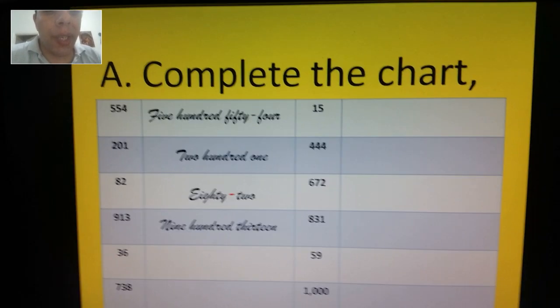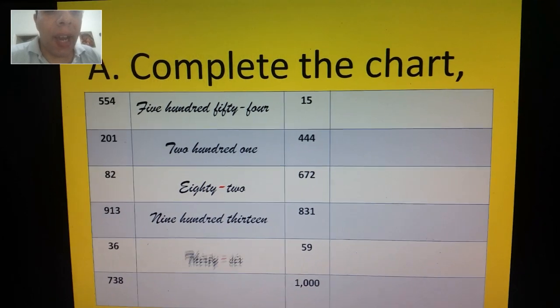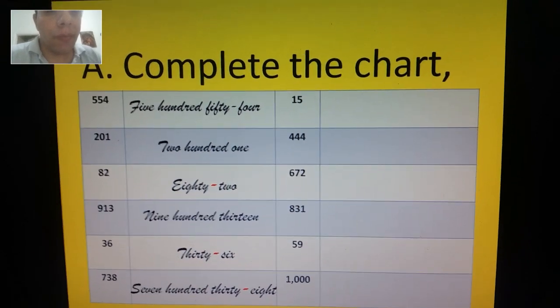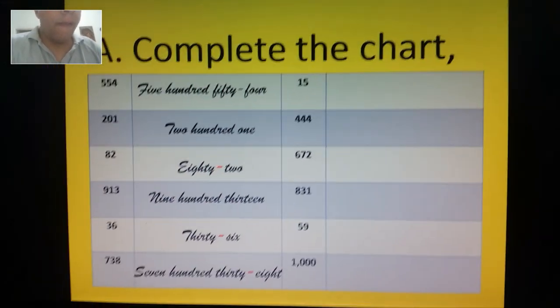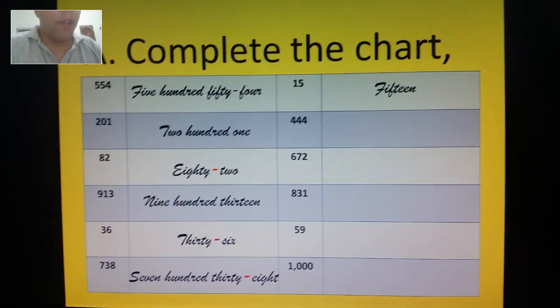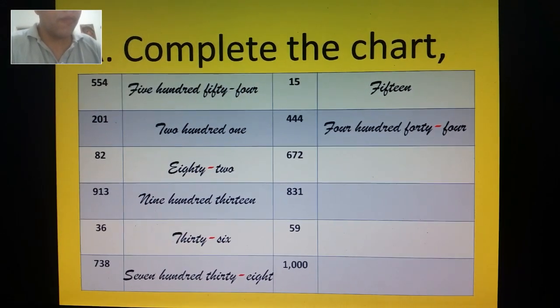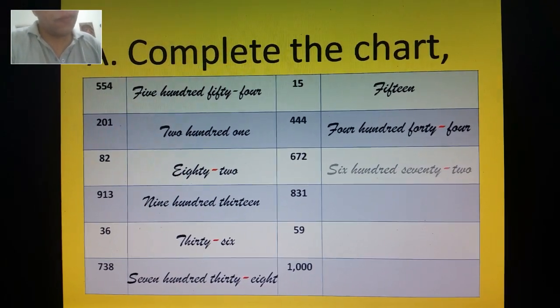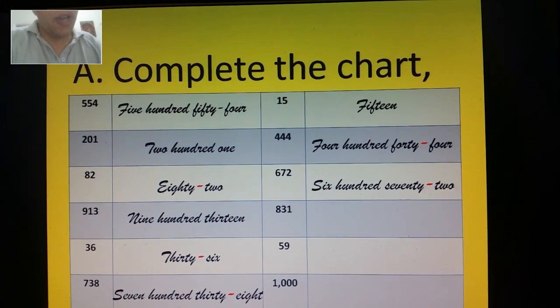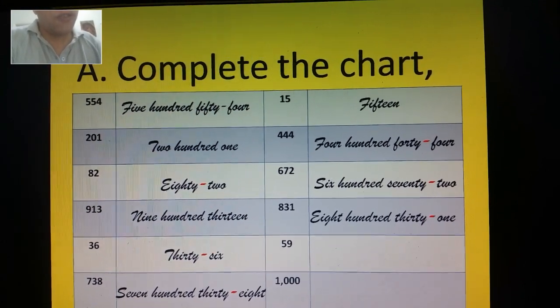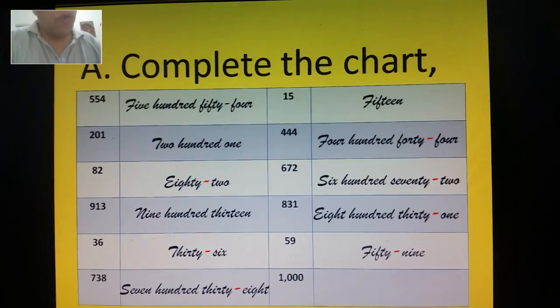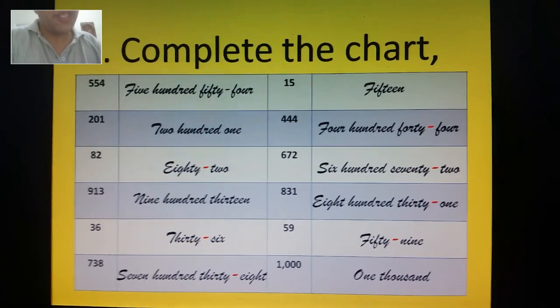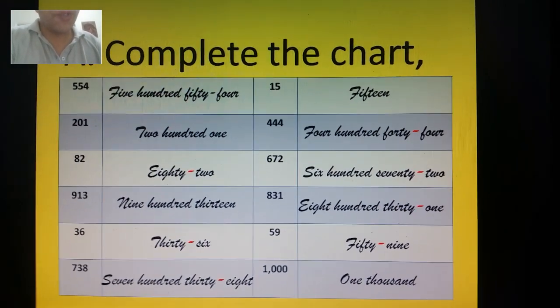82 with hyphen, you see, with dash. 913. Next number is 36—you need a hyphen. 738—you need a hyphen. 15, 444 with hyphen again. 672, hyphen again. 831, 59, 1,000. Okay, we're done with numbers.